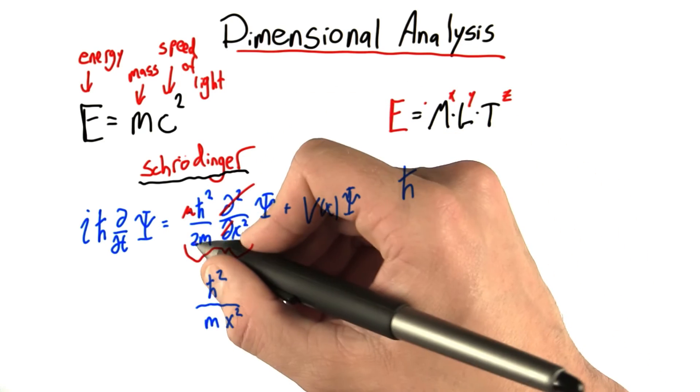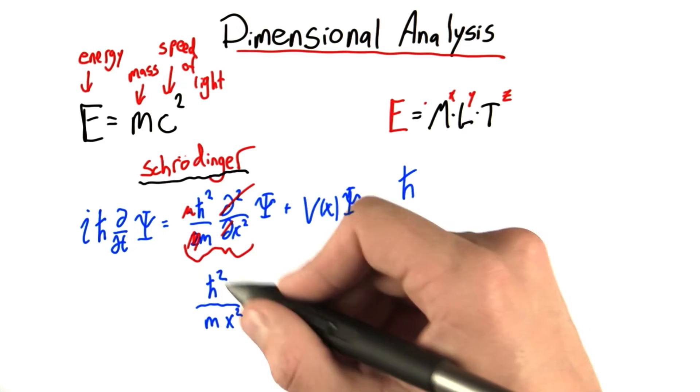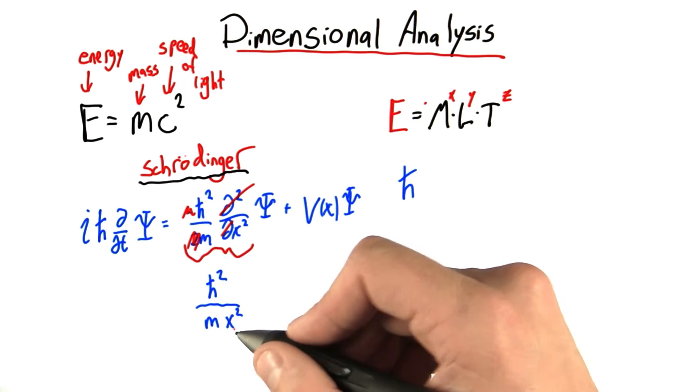The negative sign doesn't really matter, and the two doesn't matter either. So what we're left with is this. This is the relevant part to this equation unit-wise.